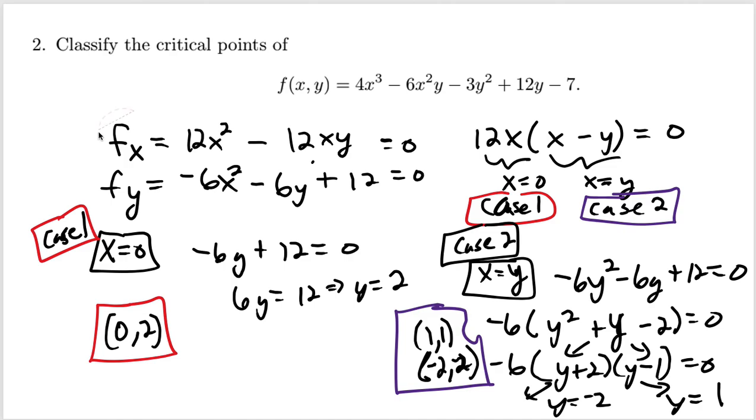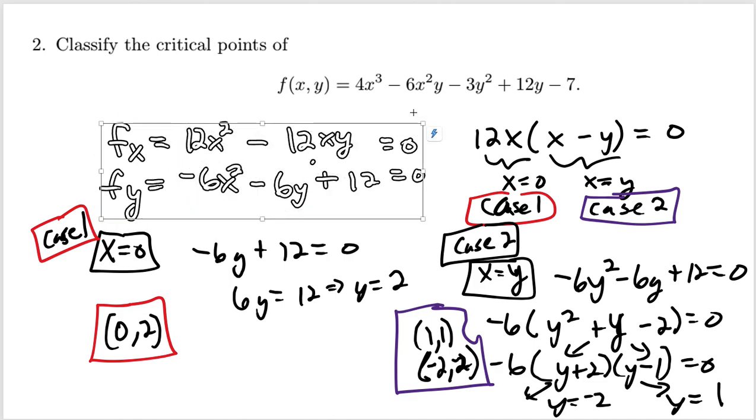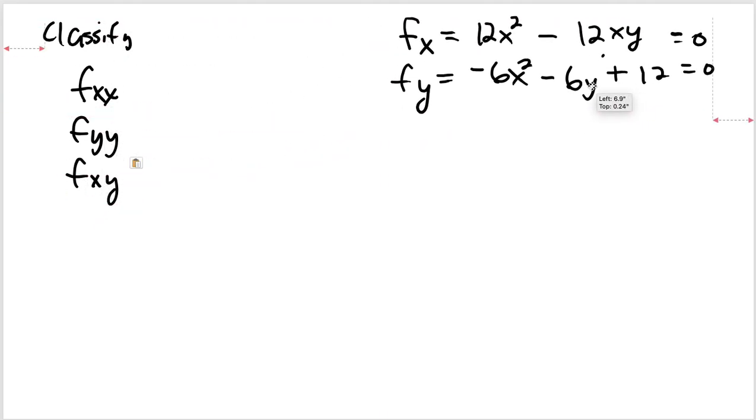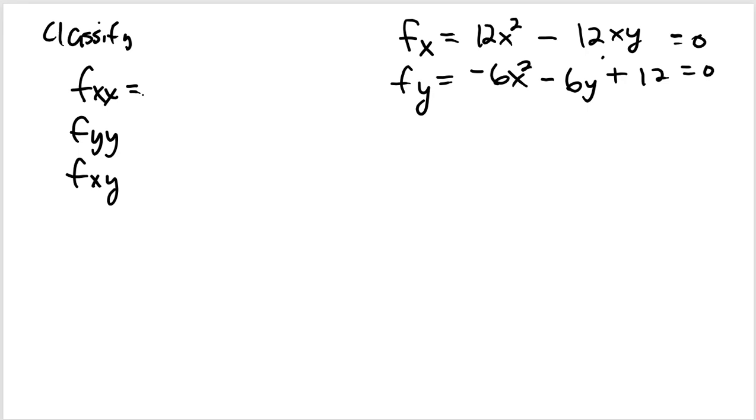With that particular x partial and y partial, now we need second partials. Double x: start with x and take x again, you'll be left with 24x - 12y. Double y: start with y and take y again, you'll be left with -6. xy is the mixed partial: start with x and take y. Or you could do it vice versa - they should be equal. You know you've done it right when they are equal. Let's start with x. The y partial of the x partial is -12x.